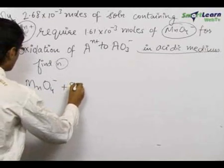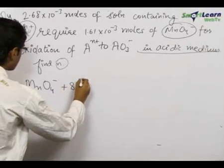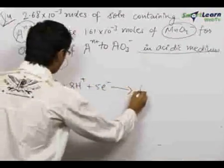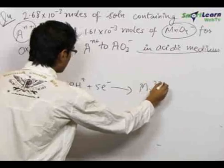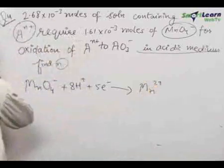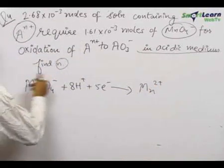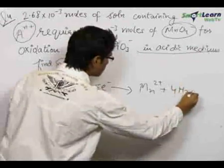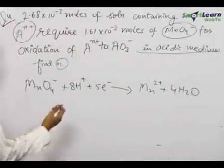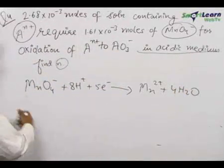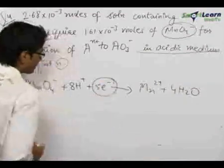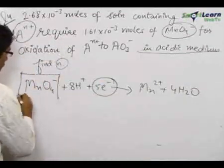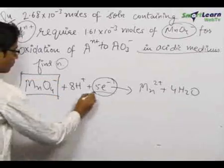MnO₄⁻ plus 8H⁺ plus 5 electrons gives Mn²⁺. For balancing the 8H⁺, we can also write 4H₂O. The number of electrons which are transferred during this reaction are 5. So, the N-factor for MnO₄⁻ is 5.